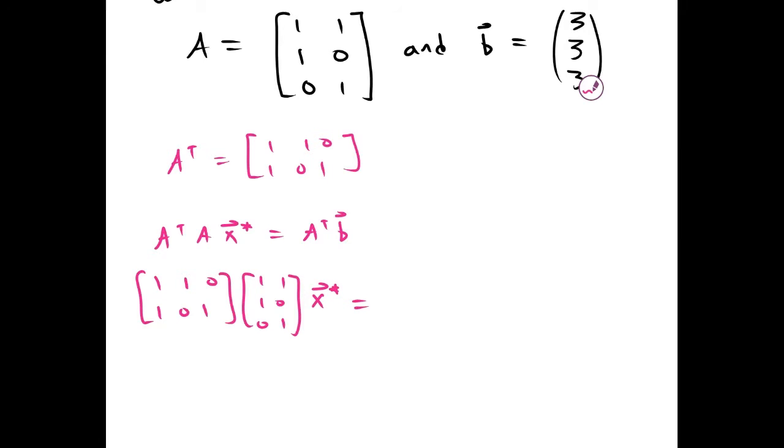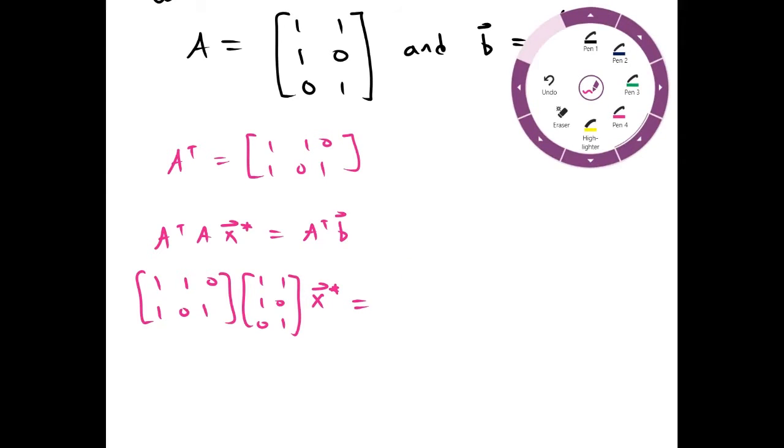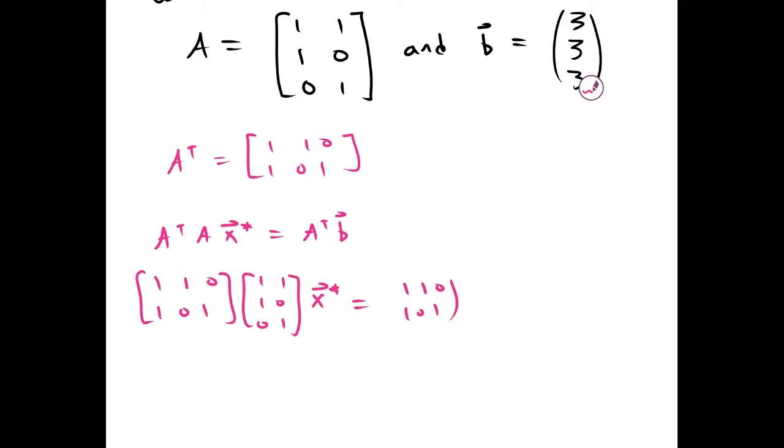And on this side, we get 1, 1, 0, 1, 0, 1, and 3, 3, 3.